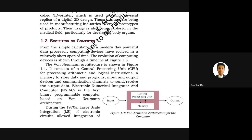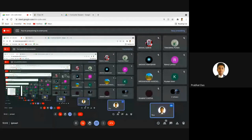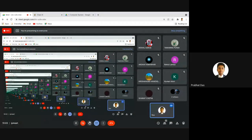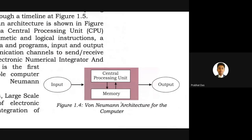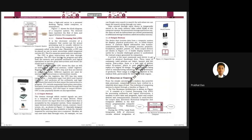All modern digital computers — from calculators to smartphones — follow a simple architecture called the Von Neumann architecture. In this architecture, there is a separate input component that sends data to the processing component, which includes the CPU and memory integrated together, and after processing, that component gives you the output.